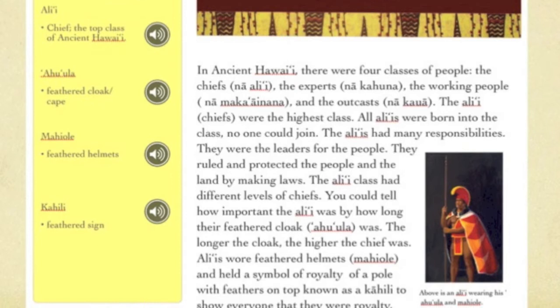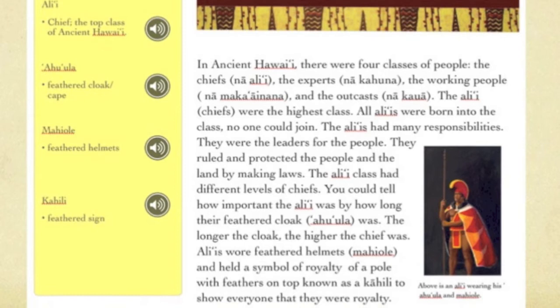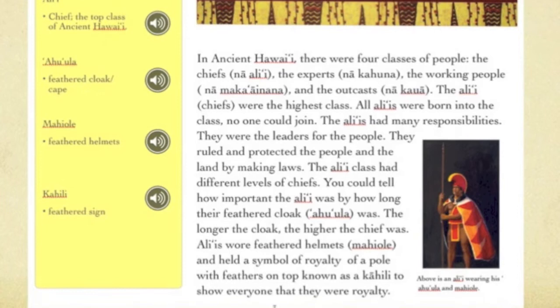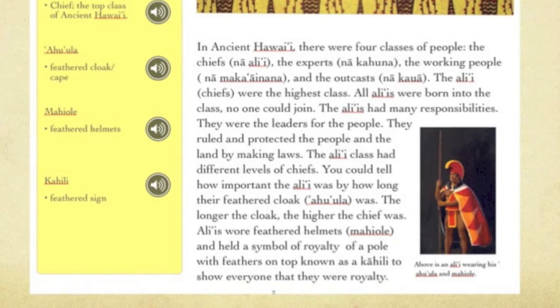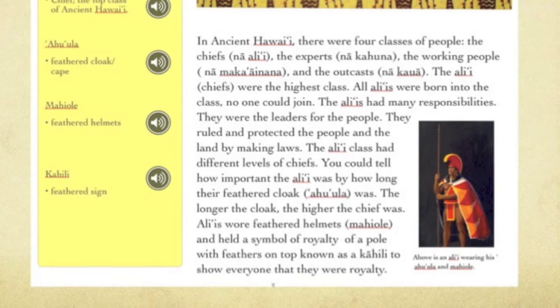For example, the Na'ali'i class believed that red represented royalty. Therefore, it follows that the use of red for royalty is then used along with the use of kapa. The significance of the kapa pattern allows us to see the status of each of these ruling classes' clothing, and is demonstrated throughout this module and the subsequent Ancient Hawaiian classes.